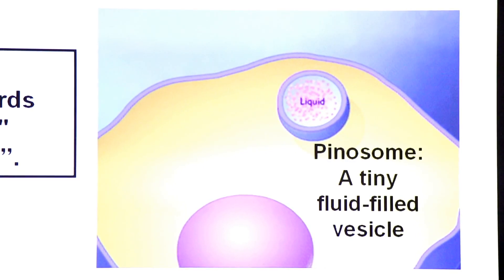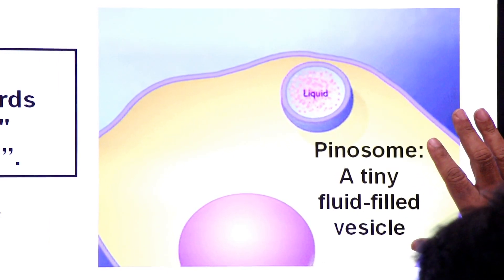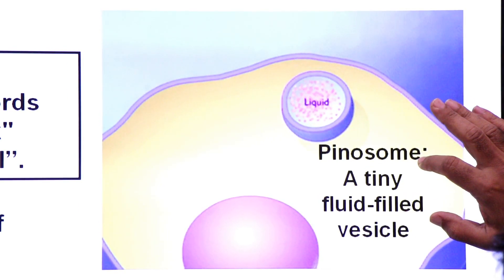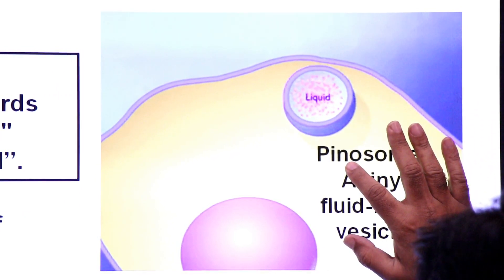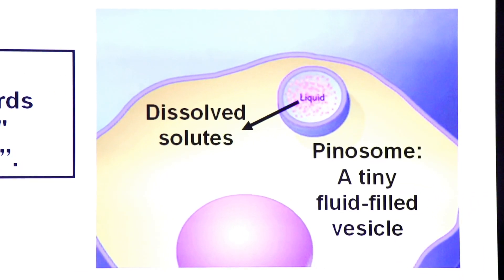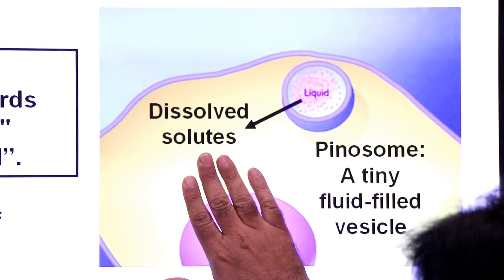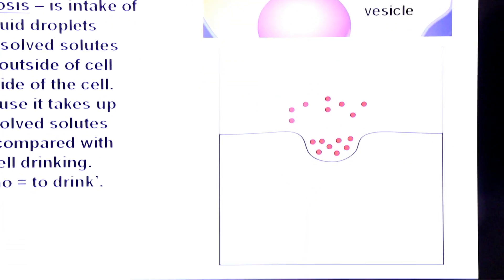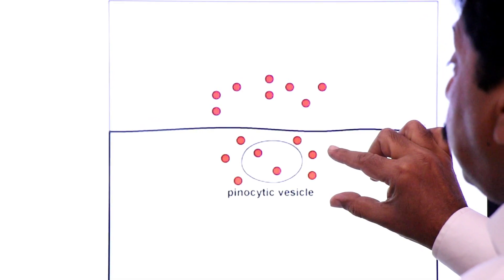In pinocytosis, a vesicle forms containing liquid with dissolved solutes inside. The vesicle formed in pinocytosis is called a pinosome — a tiny fluid-filled vesicle. In phagocytosis, the vesicle formed is called a phagosome. In pinocytosis, liquid material is greater in quantity while dissolved solutes are smaller in quantity in the vesicle.